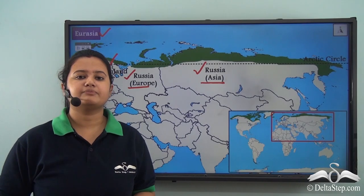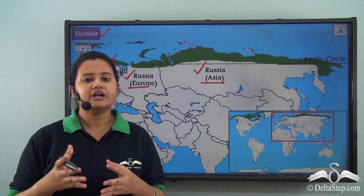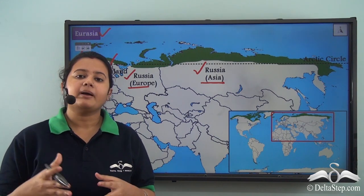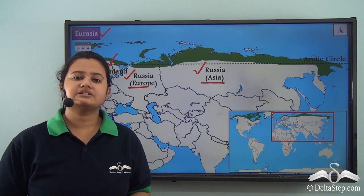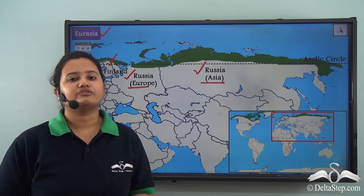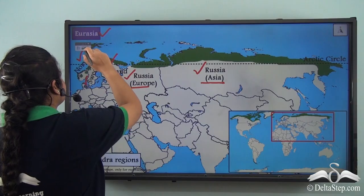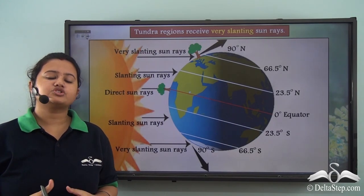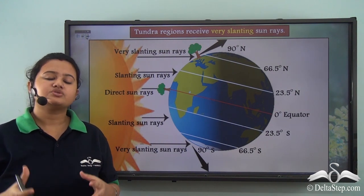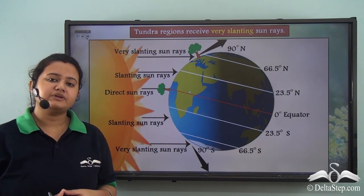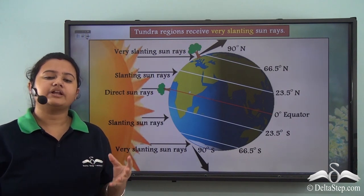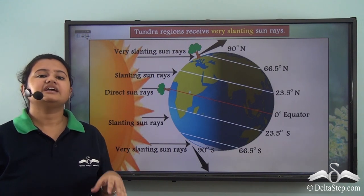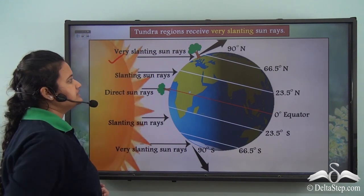So to summarize, Tundra region only exists in the northern hemisphere beyond the Arctic Circle. Now we shall discuss the climatic conditions of this biome. Since Tundra region exists around the North Pole, it is needless to say that this region experiences extremely low temperature around the year. The reason for the mean low temperature is that it receives very slanting rays of the sun.